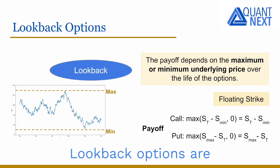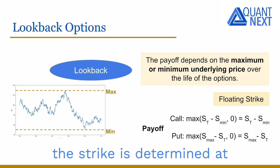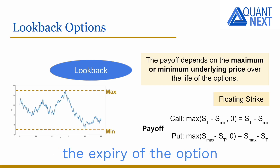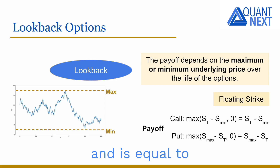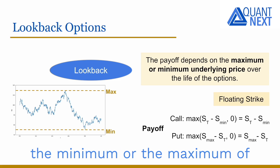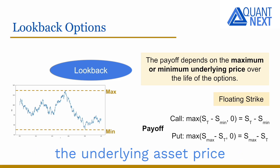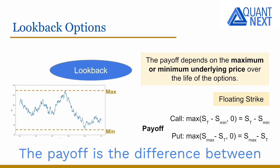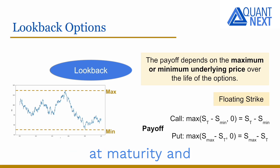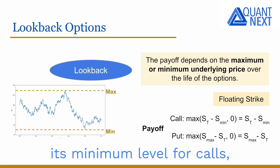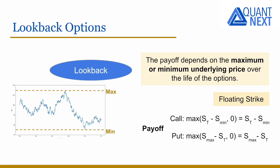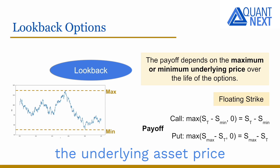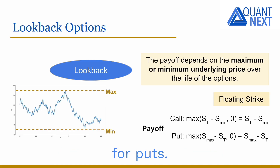Lookback options are floating strike when the strike is determined at the expiry of the option and is equal to the minimum or the maximum of the underlying asset price over the life of the option. The payoff is the difference between the underlying asset price at maturity and its minimum level for calls, and the difference between the maximum level and the underlying asset price at maturity for puts.